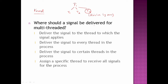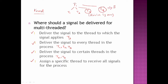Where should the signal be delivered for multi-threading? There are 4 different options. First, deliver the signal to the thread to which the signal applies — for example when T3 causes the error, the signal will be received by T3. Second option: deliver the signal to every thread in the process — T1, T2, T3. Third option: you can pick a subset of threads, for example T2 and T3. Fourth option: you can pick a single dedicated thread for signal handling, for example T4, which is exclusive to signal handling.